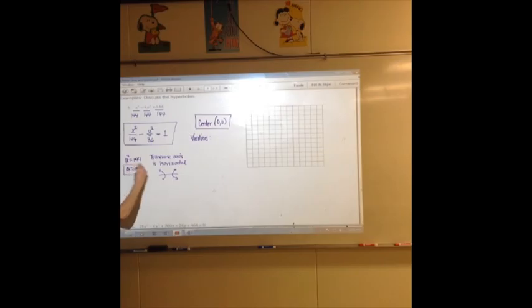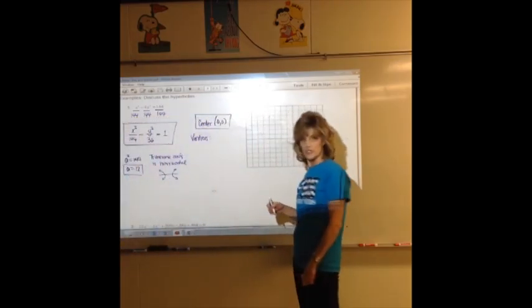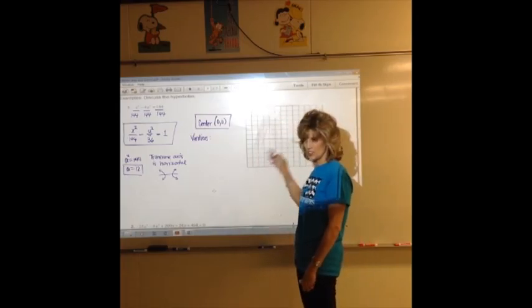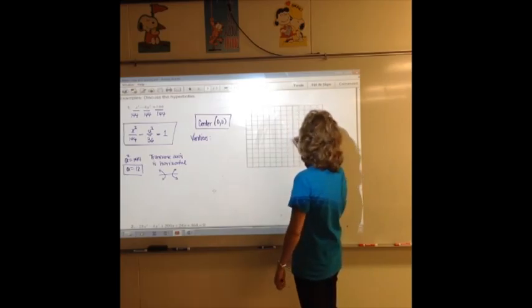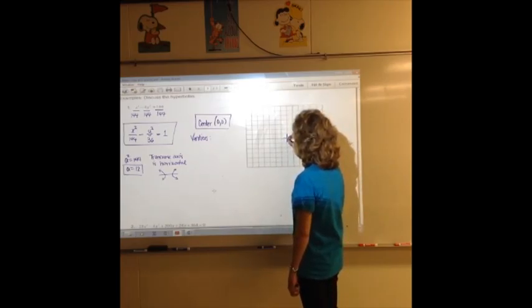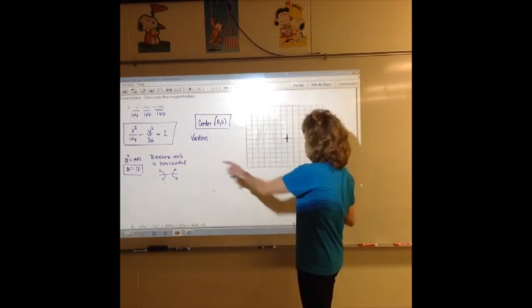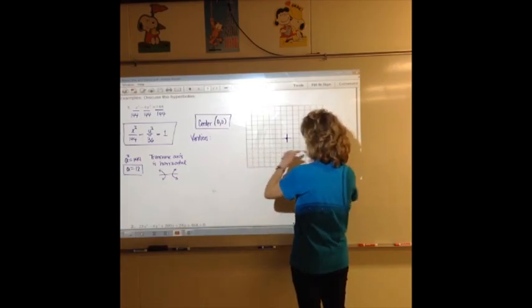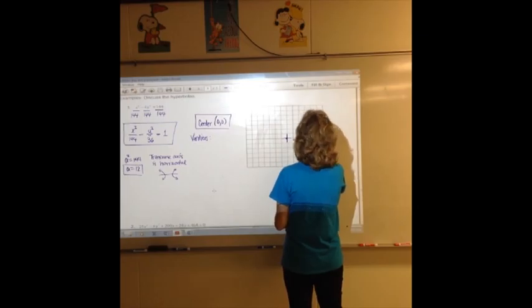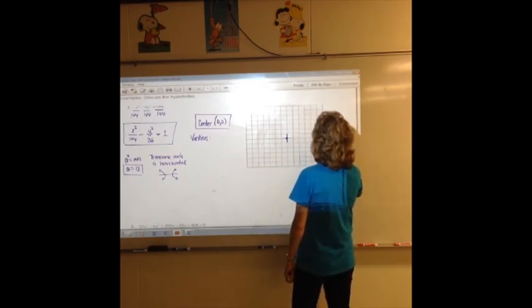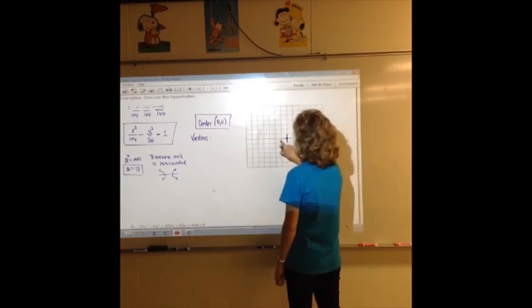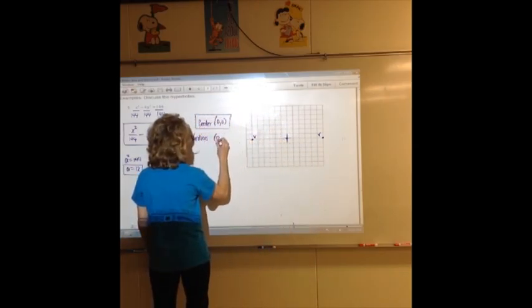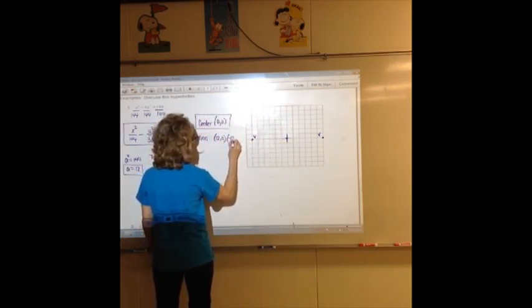That means when we graph this hyperbola in a minute, the branches are going to open in the X direction. So go to the center. Notice on this graph I didn't give you an origin, so on any of your homework papers where I didn't give you an origin, I wanted you to have the flexibility to shift it around. But in this case, the center is at the origin, so we'll just put our 0, 0 right there. A is 12. 12 tells me the distance that I go on the transverse axis because I know the branches are going to start from there. We'll count by 2 to 12. There's a vertex. Count to 12 on the other side. There's another vertex. So the vertices are at 12, 0 and negative 12, 0.